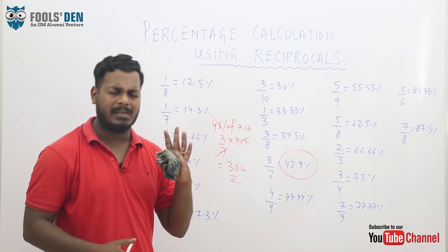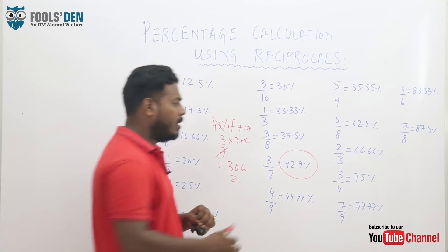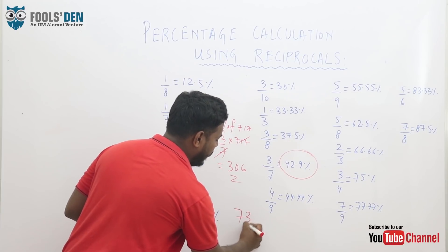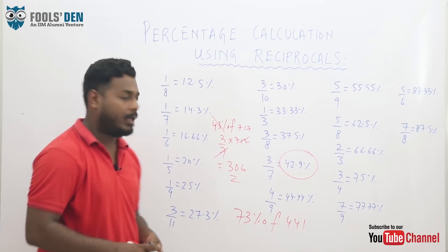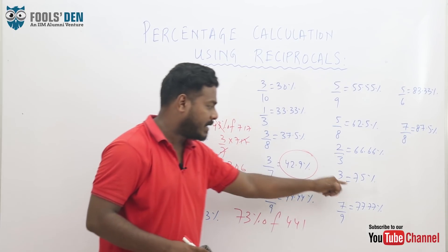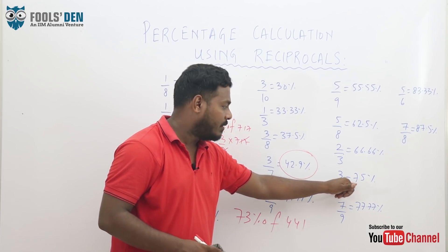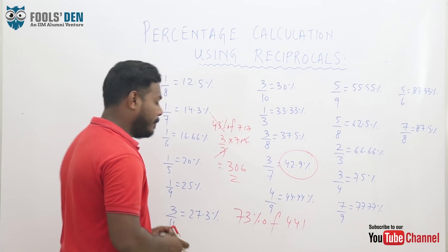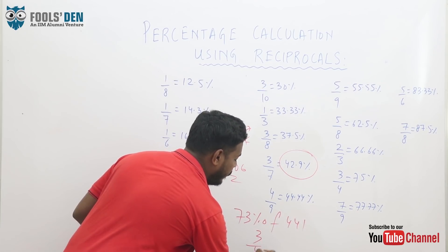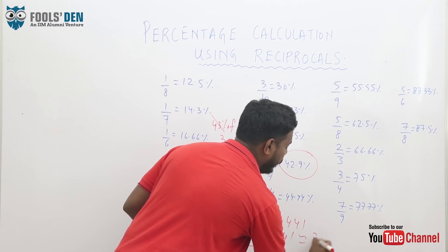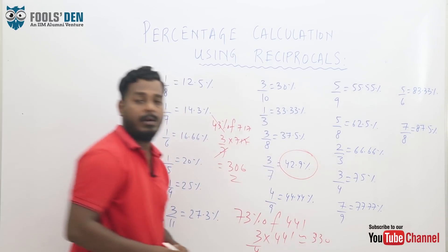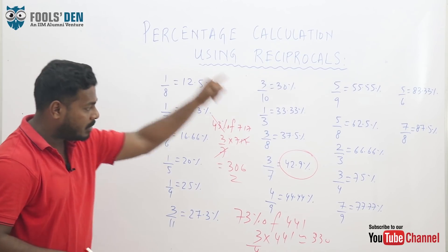Say, randomly I need to calculate 73%. Suppose 73% of any number 441. Near 73, what value do I remember? I remember 75. 75 is 3 by 4. So I will simply calculate 3 by 4 of 441 which is approximately 330. So if you remember this whole chart or matrix, you can calculate most of the percentages in a really easy and fast manner.